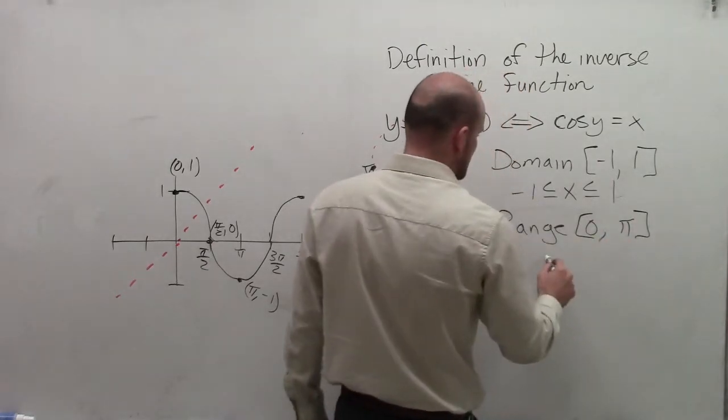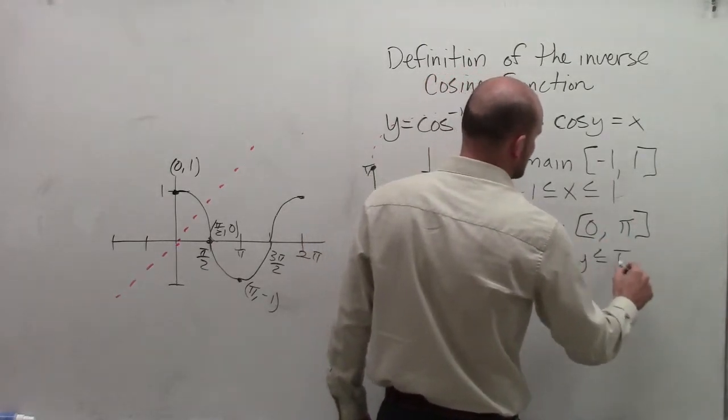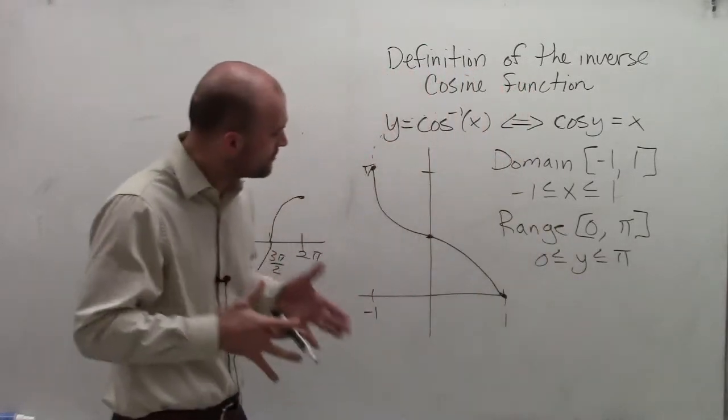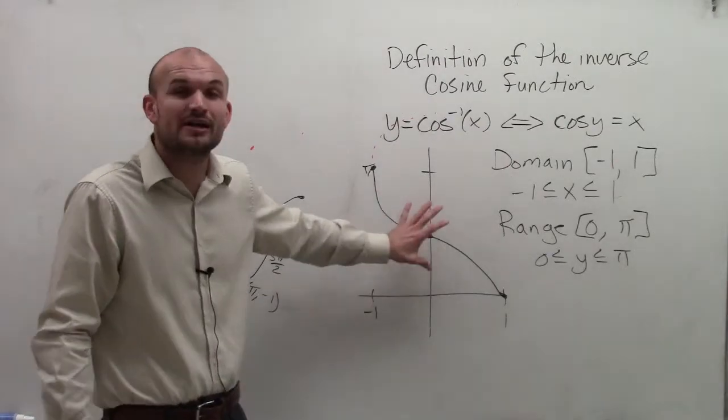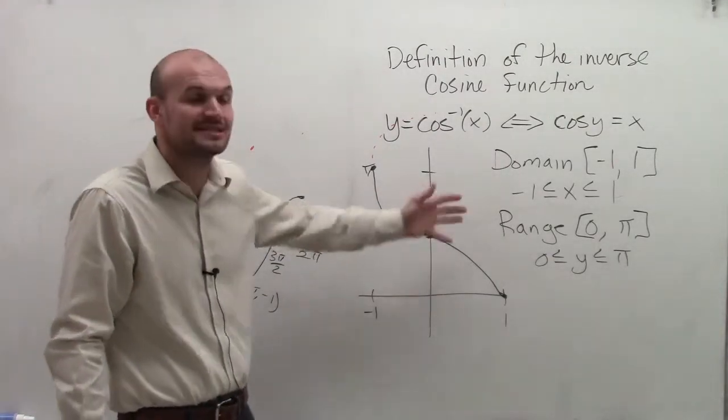And the range, rather than the graph continuing in the infinite positive, positive, negative direction, we're now going to say the range is going to be restricted between 0 and π. Where we could say 0 is less than or equal to y, which is less than or equal to π. We restrict the range so the inverse cosine is still going to be a function.